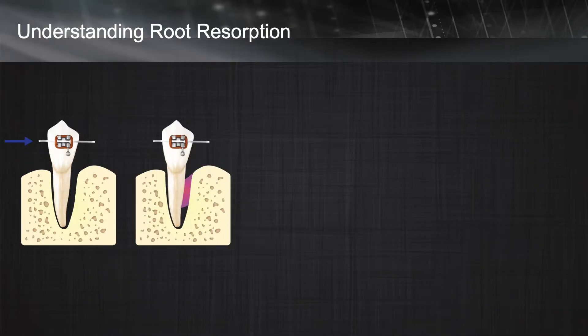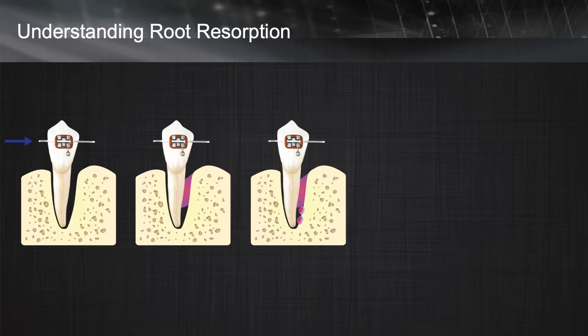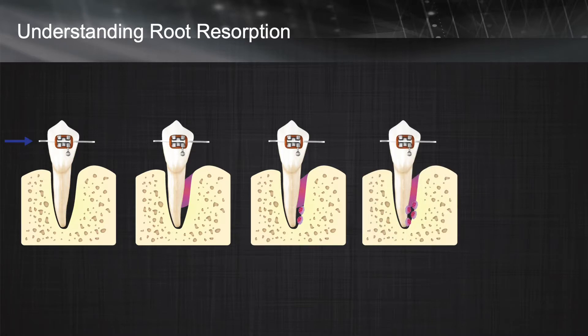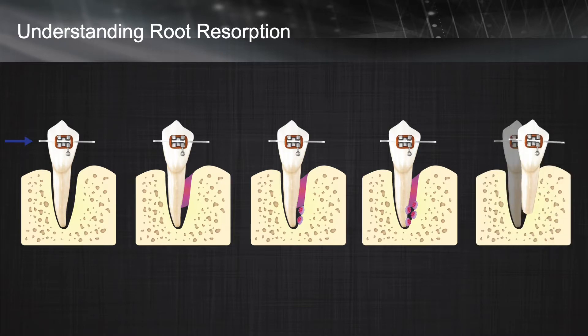What are the factors that cause root resorption? There are two main factors. One is related to the clinician, and one is related to the patient. From the clinical point of view, application of a high magnitude of forces has been shown to be more associated with root resorption. Application of these forces causes an extensive necrotic area inside the PDL called the cell-free zone. To clean this area, the bone resorbing cells need to stay in the area for a long time, and while they are there, they may attack the adjacent root and cause significant resorption.